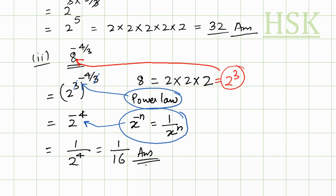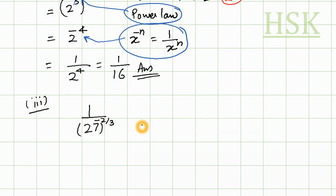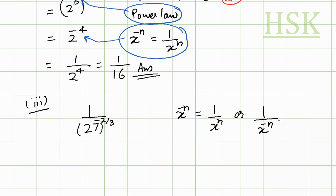For the third part, I have to solve 1 upon 27 to the power of minus 2 by 3. I'm going to use the result that x to the power of minus n equals 1 upon x to the power of n, or equivalently, 1 upon x to the power of minus n equals x to the power of n.